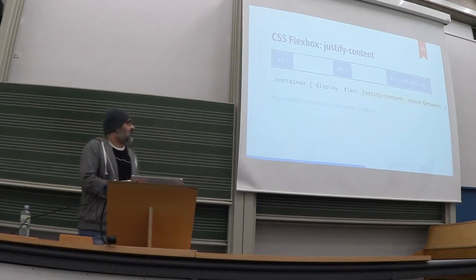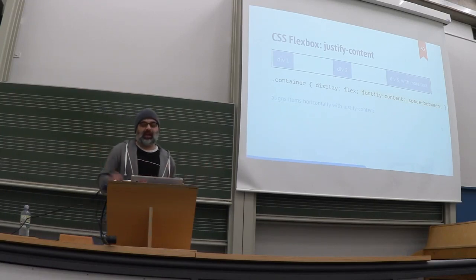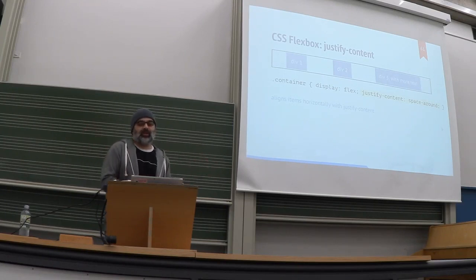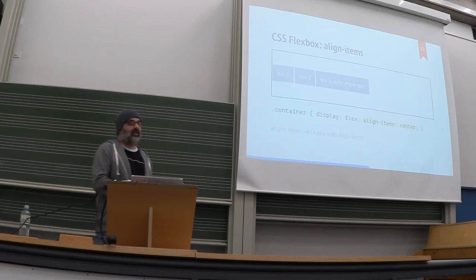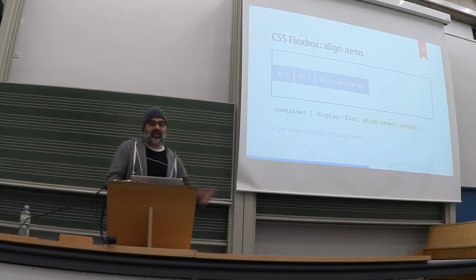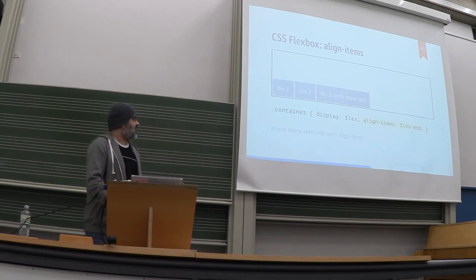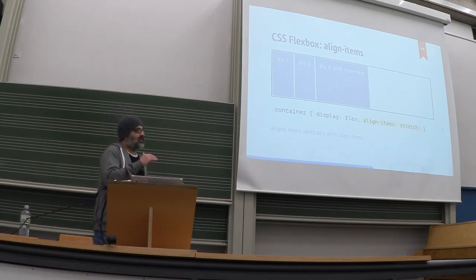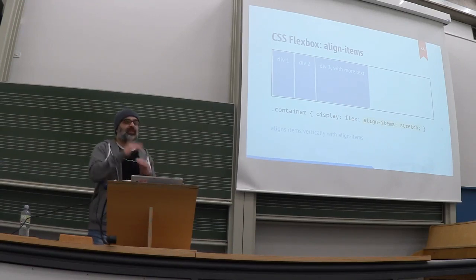You can use justify-content to spread your content out — for example, space-between, or space-around which gives more space around the edges. You can use align-items to align items vertically: align-items:center puts them in the center, or flex-end puts them at the bottom. You can even stretch your items — if you give the container a certain height and stretch the items, they will take the maximum height available.